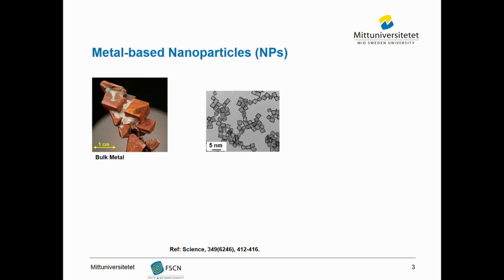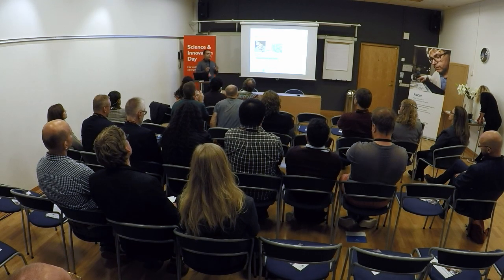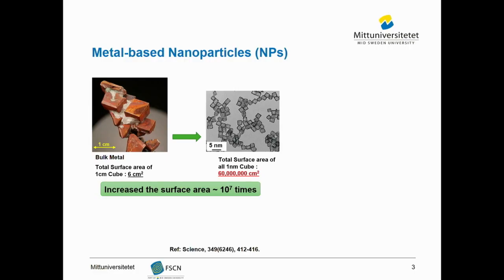On the other hand, metal particles in the nanometer size range often show interesting physical and chemical properties which sometimes differ from their bulk properties. The main feature of particles in the nanometer size range is their high surface area. For example, a one centimeter cube bulk material has a total surface area of six square centimeters, but if we break down this structure to one nanometer cubes, the total surface area would be 10 million times higher.